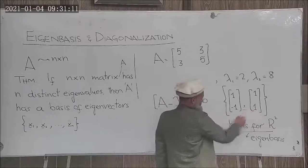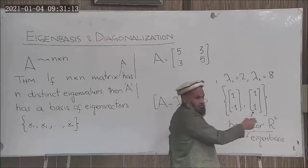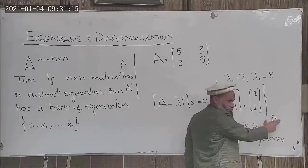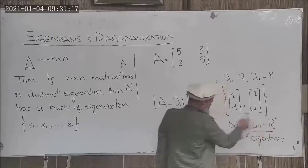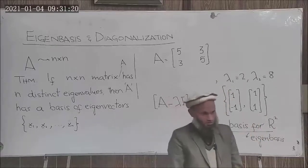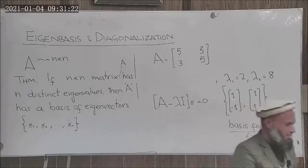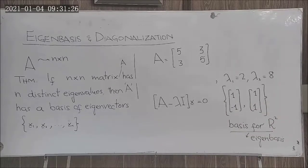This was a two by two matrix that had two distinct eigenvalues, and corresponding to these two distinct eigenvalues we had two linearly independent eigenvectors. These two linearly independent eigenvectors span R^2, and therefore this basis is called the eigenbasis. If the matrix has n distinct eigenvalues, then it will have an eigenbasis.